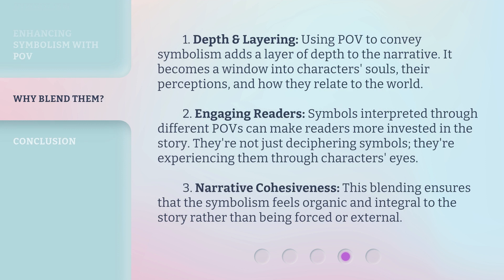There are key benefits to this blend. First, depth and layering: using POV to convey symbolism adds a layer of depth to the narrative — it becomes a window into characters' souls, their perceptions, and how they relate to the world. Second, engaging readers: symbols interpreted through different POVs make readers more invested in the story — they're not just deciphering symbols, they're experiencing them through characters' eyes. Third, narrative cohesiveness: this blending ensures that the symbolism feels organic and integral to the story rather than forced or external.